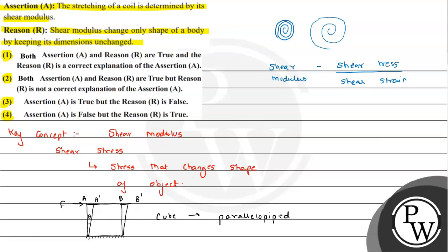One thing we need to remember here: if volume or dimension is intact but shape has changed, that is due only to shear modulus.